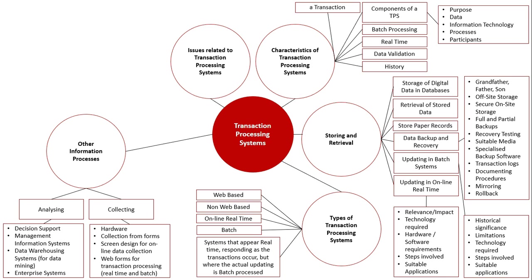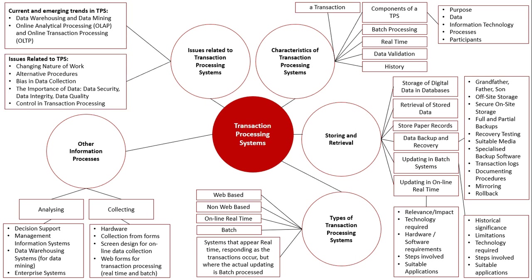The final area is issues related to transaction processing systems, starting with specific trends. Data warehousing is the storing of archive data, and data mining is going through that data to look for trends and patterns useful for future planning. We also look at OLAP and OLTP tools: OLAP — Online Analytical Processing — is a data mining tool used to find trends in archive databases, whereas OLTP is used on live databases that are still being actively updated.